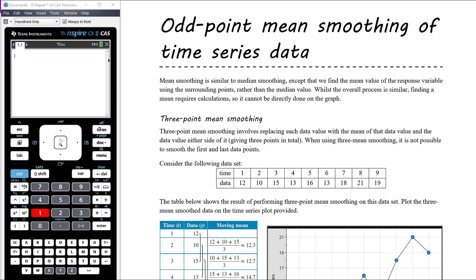We want to continue looking at smoothing of data. In the last video we looked at median smoothing, and we can only apply median smoothing if we use an odd number of points — three points, five points, seven points — because the median of an even number of points falls somewhere between two data points. So we're only going to look at odd-point median smoothing.